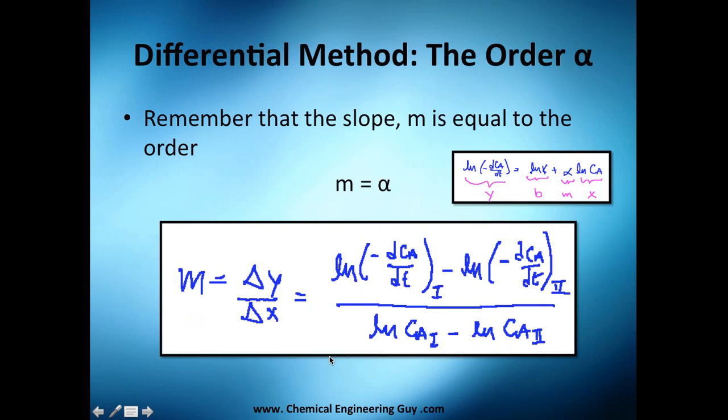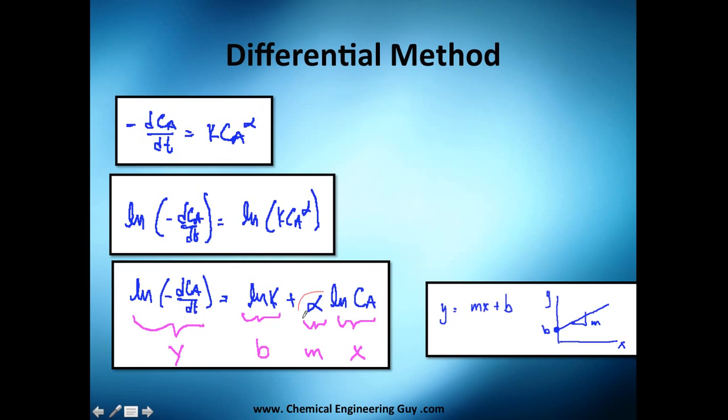Remember that the slope m is equal to the order, alpha. Many math equations use this nomenclature: y equals mx plus b, where m is the slope. Remember, slope is by definition the difference of y divided by the difference of x, and b is the intercept, the y-intercept. When x equals zero, how much is the value of y?